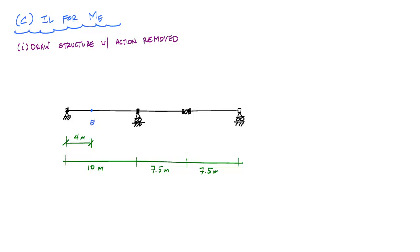Now, to finish this example off, we're going to determine the influence line for the internal moment at point E. And the first thing we've got to do is draw the structure with the action removed.